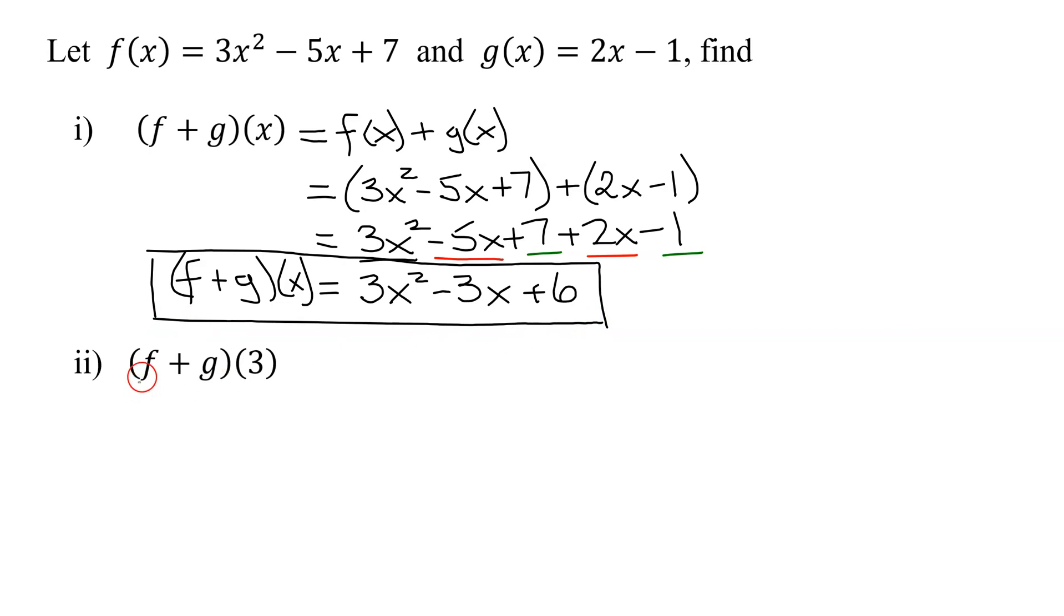Now I need to figure out what (f + g)(3) is, or the sum function evaluated at 3. Since I've already figured out the sum function up here and I have its definition, to figure out (f + g)(3), all I have to do is plug a 3 in for my definition of the sum function. So it's just going to be 3 times, instead of x, I'm going to have 3. So it's 3 × 3² - 3 × 3 + 6.